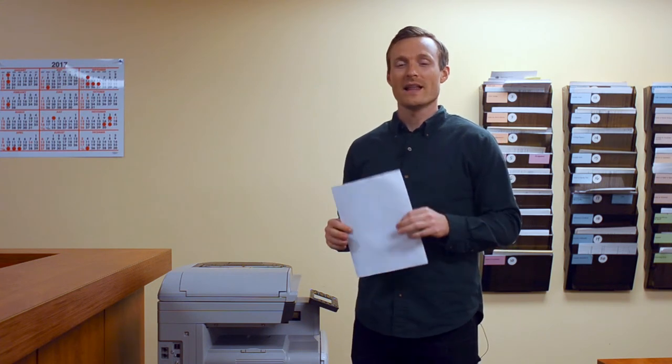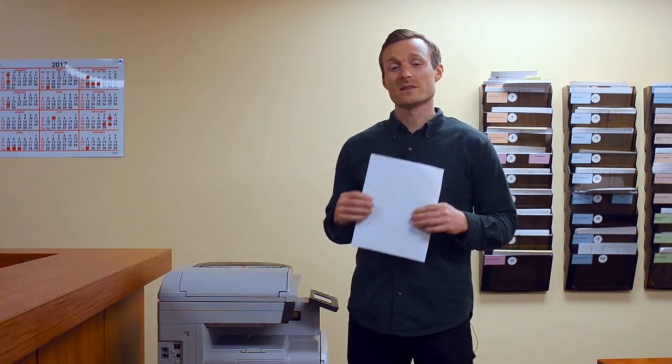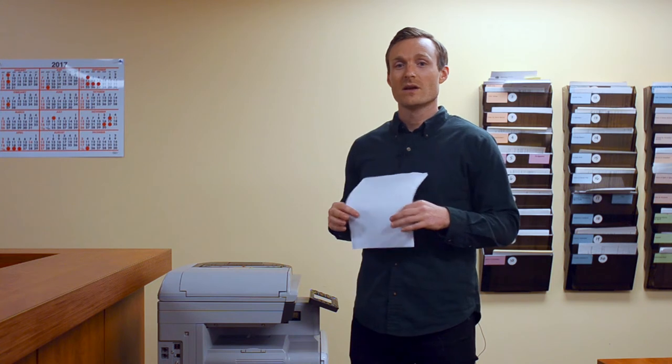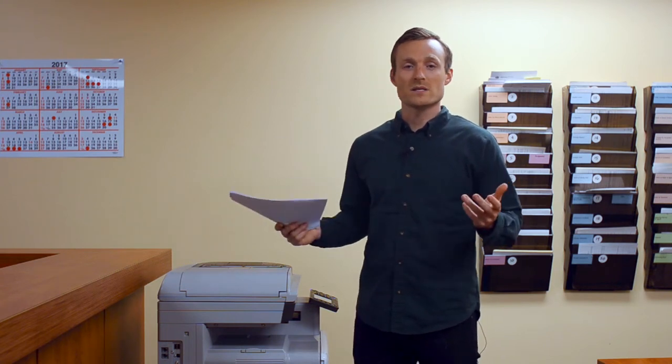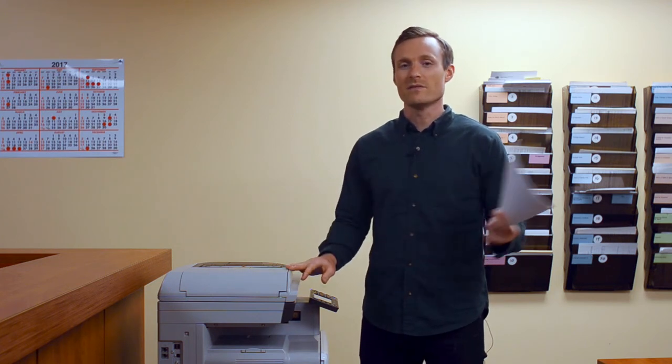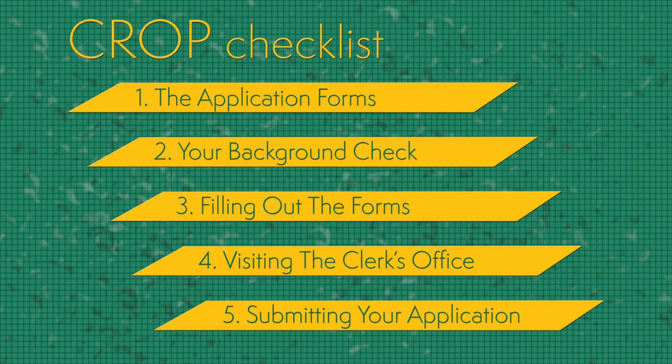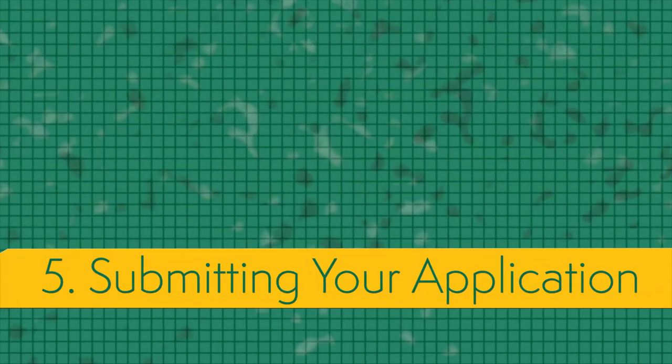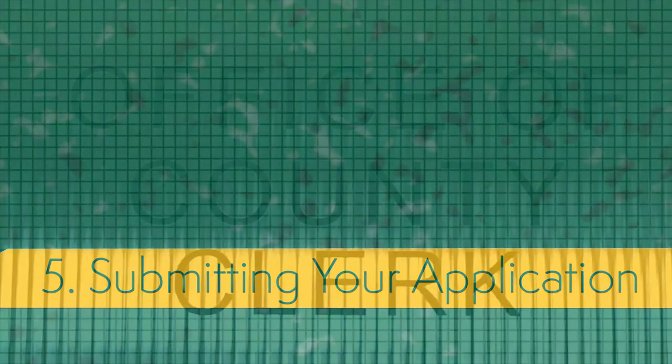Great job. At this point, your paperwork should be complete. The last thing to do before you head to the clerk's office to file your petition is to make some copies. You'll want one copy of your complete application packet for yourself, one copy for the court clerk, and an additional copy for every prosecutor that you need to serve notice to. If you only need to notify a single prosecutor, that's three total copies. Most courthouses have a copy machine you can use for a small fee. Now that we have our copies, we can head back to the clerk's office for the final step: submitting your application.